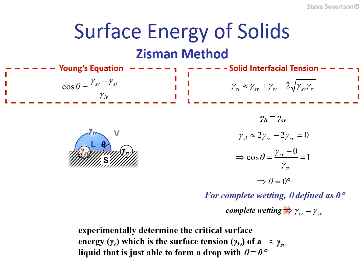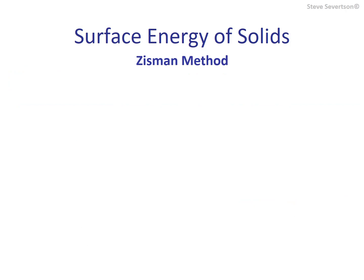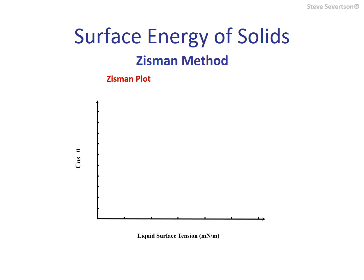Keep in mind, however, that it is likely that a liquid just able to wet a particular solid does not exist — it's hypothetical. The question, then, is how do we find this critical surface tension for a hypothetical liquid that is just able to form a drop on our solid surface with a contact angle of zero degrees? For this, Zisman proposed an extrapolation approach. The cosine of the contact angle for a series of liquids is plotted against their surface tension. This is referred to as the Zisman plot.